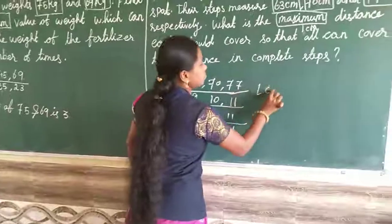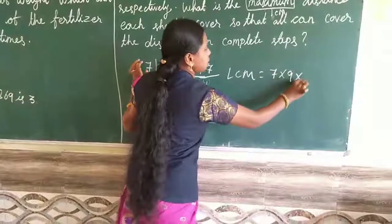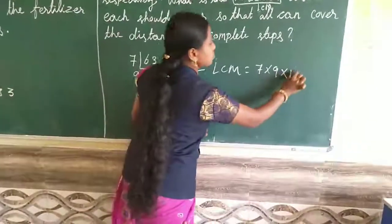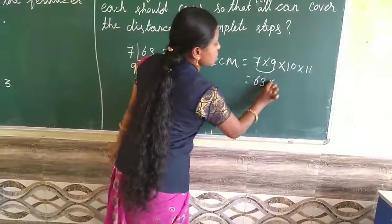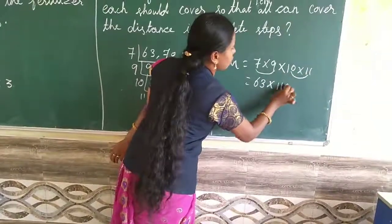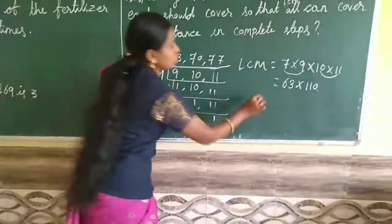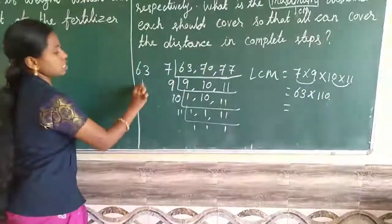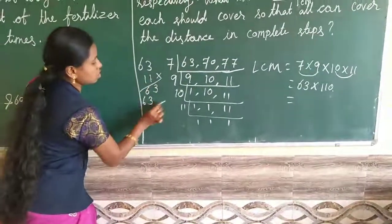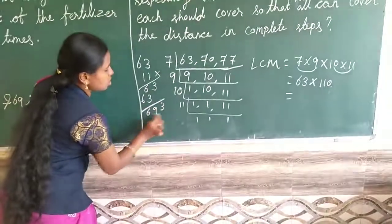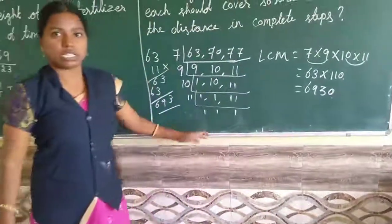LCM equal to, we have to multiply these numbers fully. Seven times nine times ten times eleven. Seven times are 63, 63 into 10, eleven. 63 into 11. So, 3, 6, 3, 3, 9, 6, 6, 9, 3. 6930 is the answer for second sum.